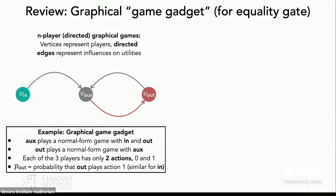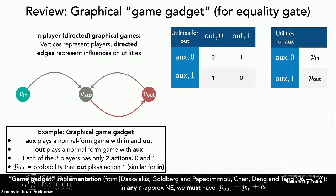I want to give a brief review of how this is typically done for normal form games, specifically reviewing the initial steps for showing intractability of N-player graphical games. In this setting, the vertices of a graph model players and directed edges represent influences on utilities. For three players — in, aux, and out — aux plays a normal form game with in and out, and out plays a normal form game with aux. Each player only has two actions: 0 and 1. The fundamental fact is that it is possible to set up a game and define utility tables for out and aux such that for any Nash equilibrium of this graphical game, we must have the approximate equality constraint p_out ≈ p_in. This is what it means for a game gadget to implement an arithmetic gate.